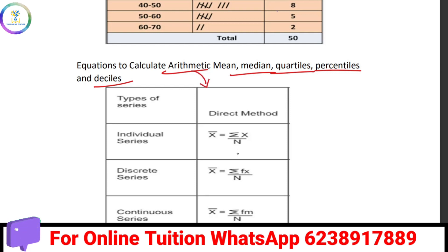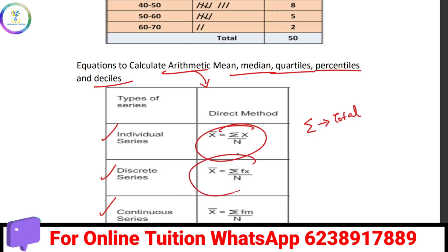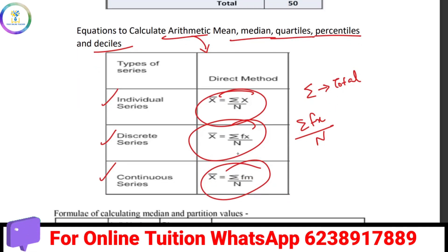We have three types of series: individual series, discrete series, and continuous series. For the individual series, the arithmetic mean formula is sigma x by n — that is the total of x divided by n, where n is the number of items. For the discrete series, it is sigma fx by n — fx total divided by n. For the continuous series, it is sigma fm by n — fm total divided by n.